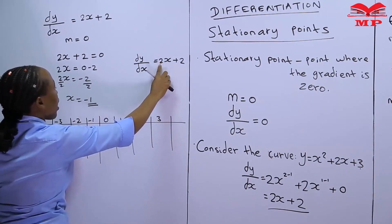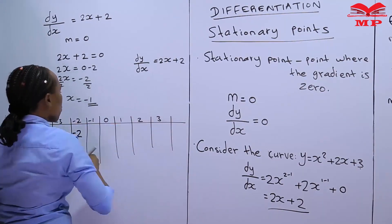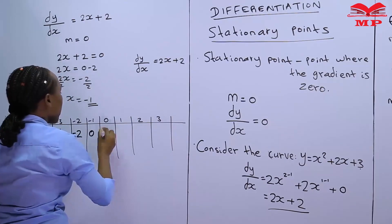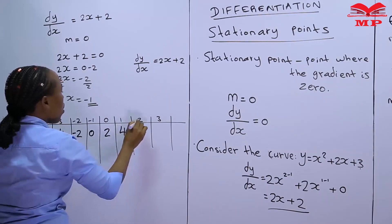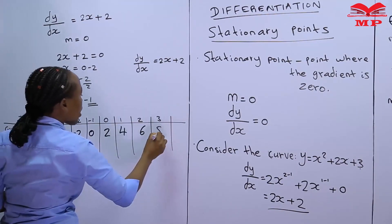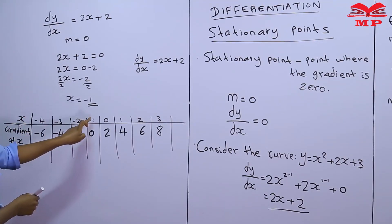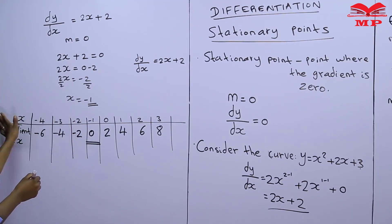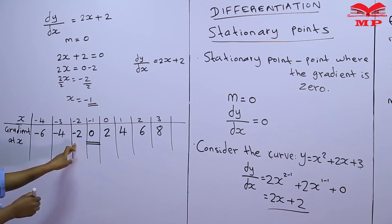Continuing the table: for x = -1: 2(-1) + 2 = 0. For x = 0: 0 + 2 = 2. For x = 1: 2 + 2 = 4. For x = 2: 4 + 2 = 6. For x = 3: 6 + 2 = 8. We can see clearly that at x = -1, the gradient is 0, with negative values to the left and positive values to the right.